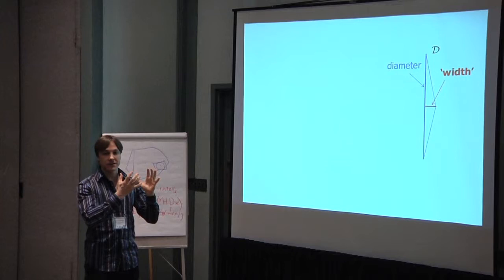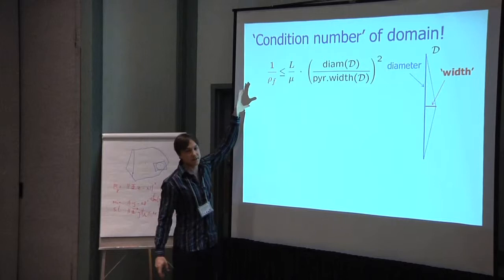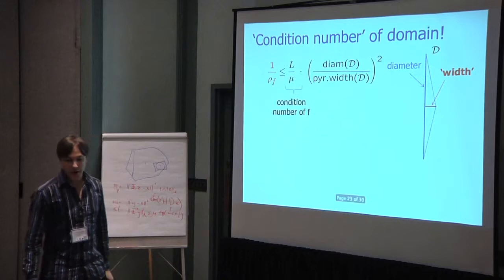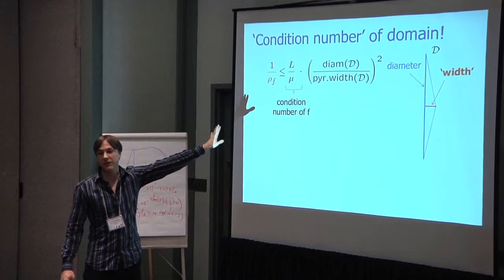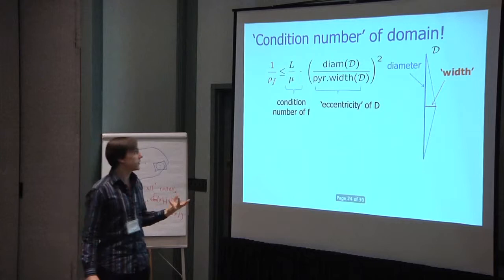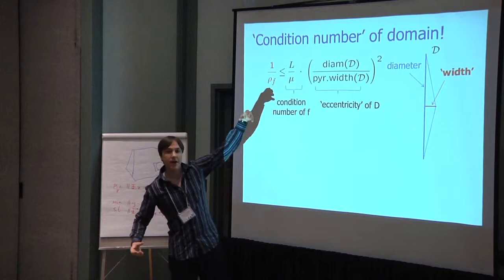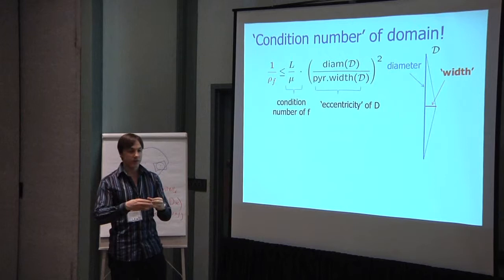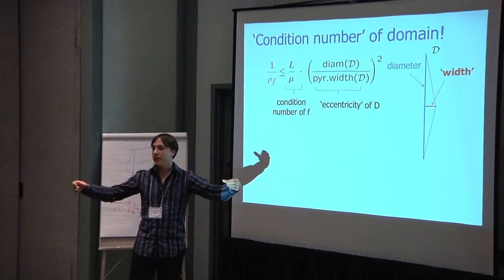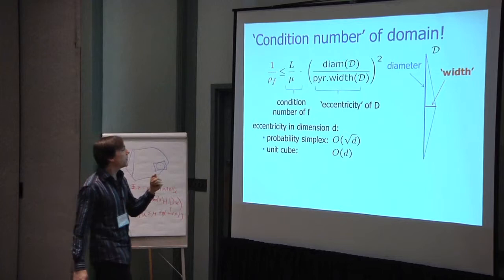If you compare the width to the diameter, this ratio in some sense characterizes a condition number of your set. Interestingly, we can interpret the inverse of the linear convergence rate as the product of the condition number of f. That's a standard quantity that you would have if you would look at the convergence rate of gradient descent, but also we have this geometric quantity which depends on the constraint and not on the function, which is the eccentricity of D. If you have a very narrow set, you have very high eccentricity. In analogy, it's kind of similar to when you have a high condition number where you have those big ellipsoid ellipses as your level set.